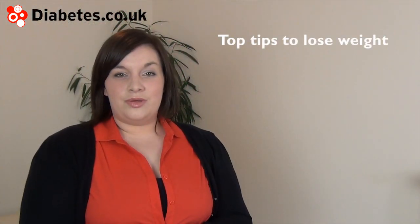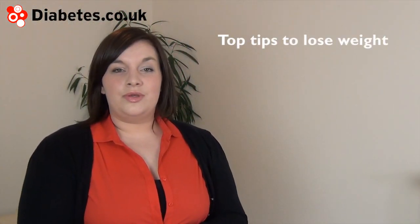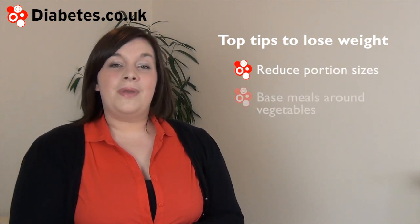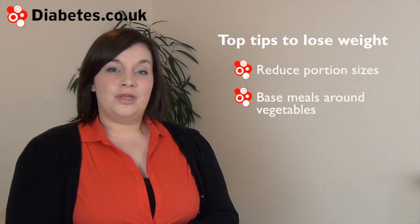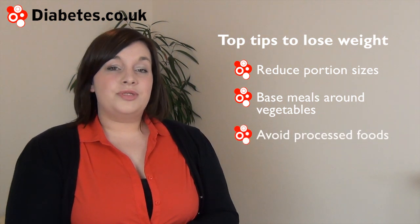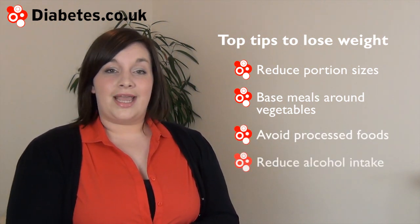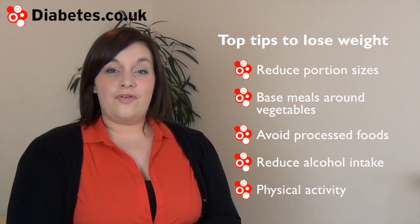The primary methods of avoiding type 2 diabetes are to achieve or maintain a healthy body weight and to keep physically active. The following methods can all be useful when trying to lose weight: reducing portion sizes, basing main meals around vegetables, cutting back on takeaways or processed foods, cutting back on alcohol intake, and getting at least two and a half hours of physical activity each week.